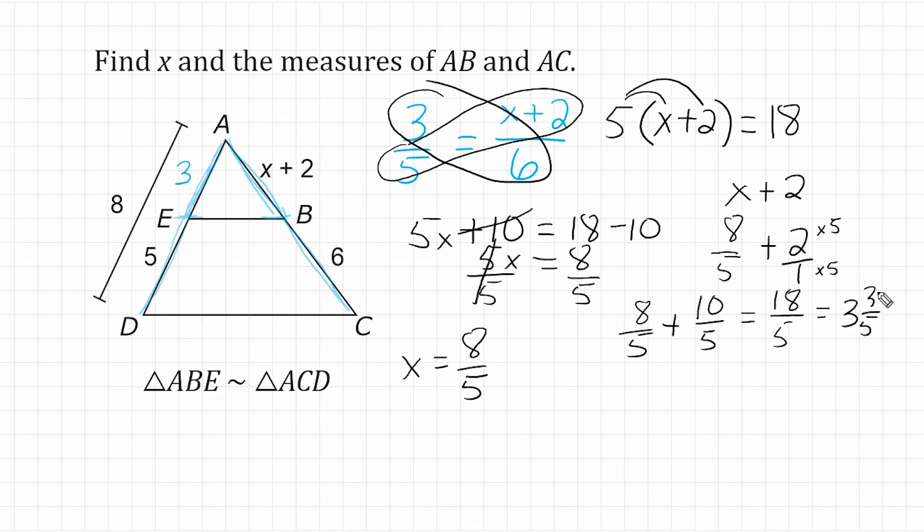Now, if we took this length right here, 3 and 3 fifths, and add it to 6, this line segment plus this line segment of 6 would be equivalent to the length of AC.